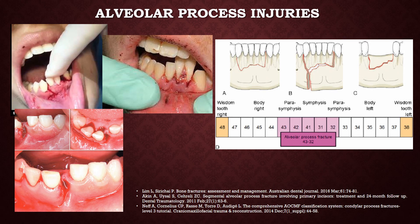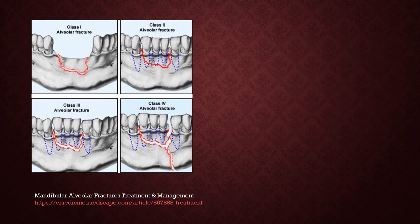When the alveolar process sustains injury, these images show how teeth are displaced and an entire fragment of the anterior part of the jaw can be displaced. This diagrammatic representation shows the different types of alveolar process fractures. This classification of alveolar process fractures is shown here — you can refer to this article for detailed management.